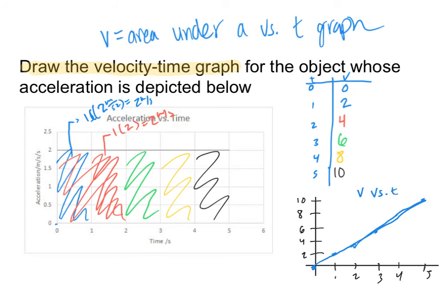Just a note: if the object had started at an initial velocity of 2 meters per second instead of 0, I would just add 2 to each value, giving 2, 4, 6, 8, 10, 12. The key thing to remember is that the area under your graph tells you the change in velocity between the two time points you're calculating — and you always add that change to your previous velocity.